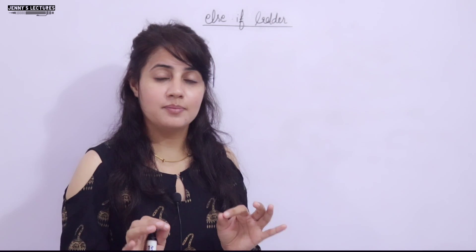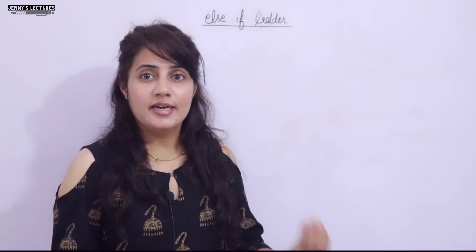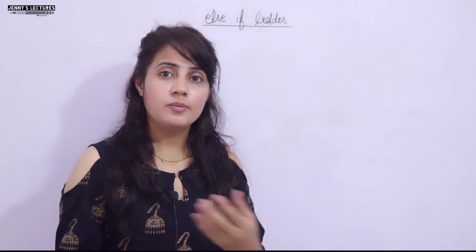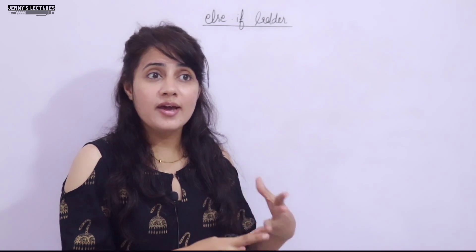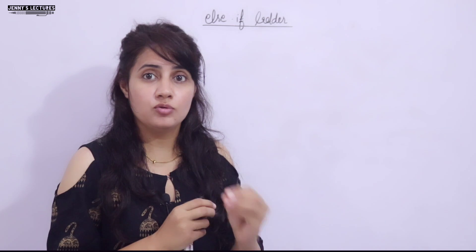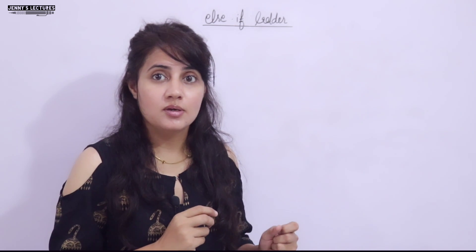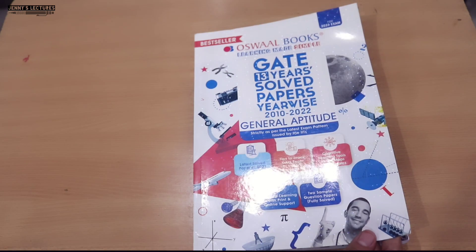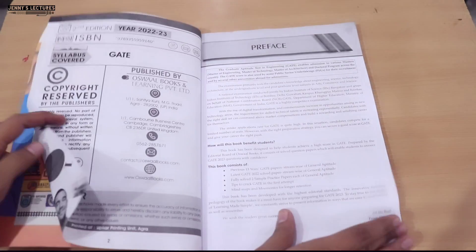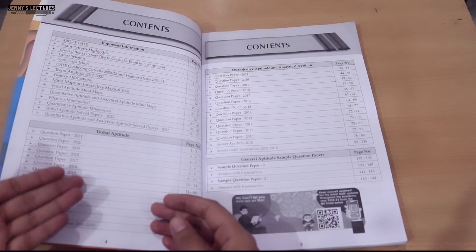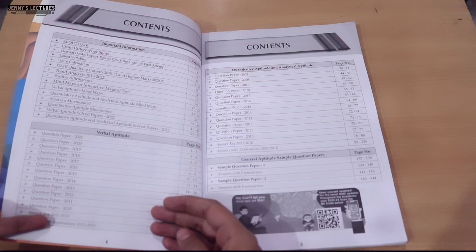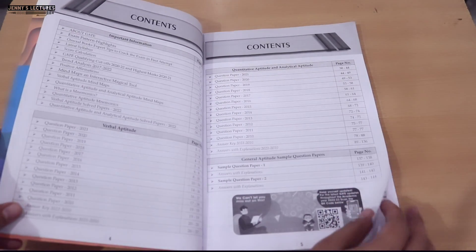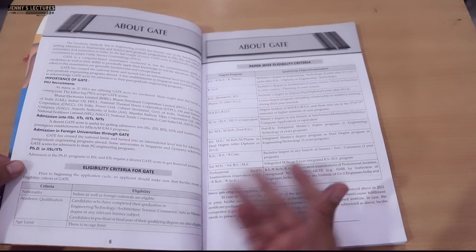Before proceeding, let me tell you something important. Many students ask me how to prepare for the GATE exam — specifically for paper one, because they are confident about their core subject but unsure about paper one: the syllabus, the books, and where to practice previous year question papers. Previous year question papers play a vital role in your GATE preparation. I found a good book from Oswal Books for General Aptitude. It contains information about GATE, year-wise verbal aptitude question papers with answers and explanations, quantitative aptitude, analytical aptitude, and two sample papers.